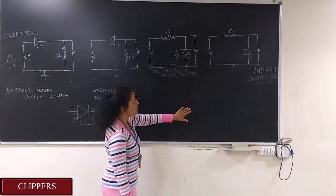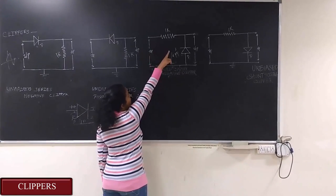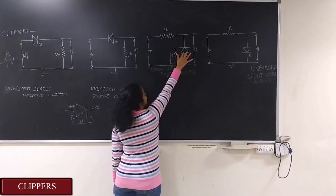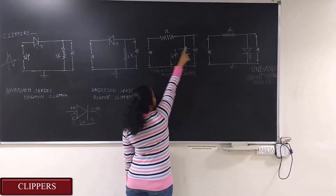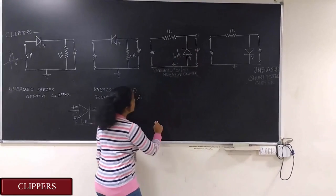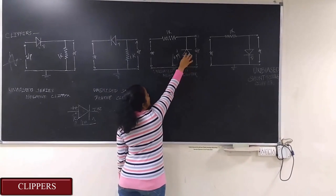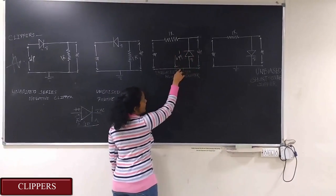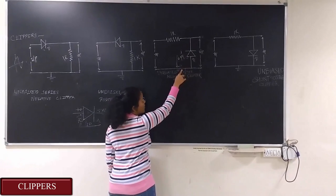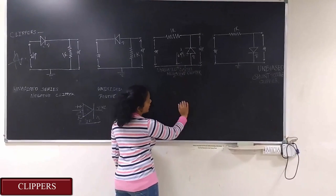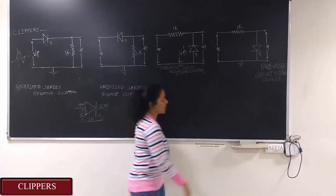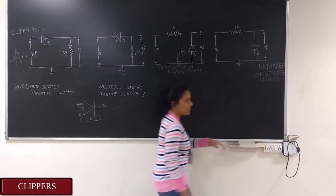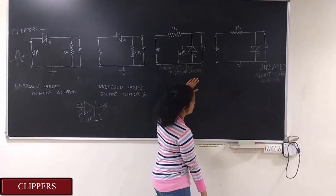Now what happens in shunt clipper is that when I give a positive input then this diode here will be on. As a result of which we will get the input at the output. When I give the negative signal this diode will be on and the resistor will directly connected to the ground. As a result of which the negative side is clipped. That's what happens in negative clipper. In positive clipper it is exactly the opposite of that of negative clipper.